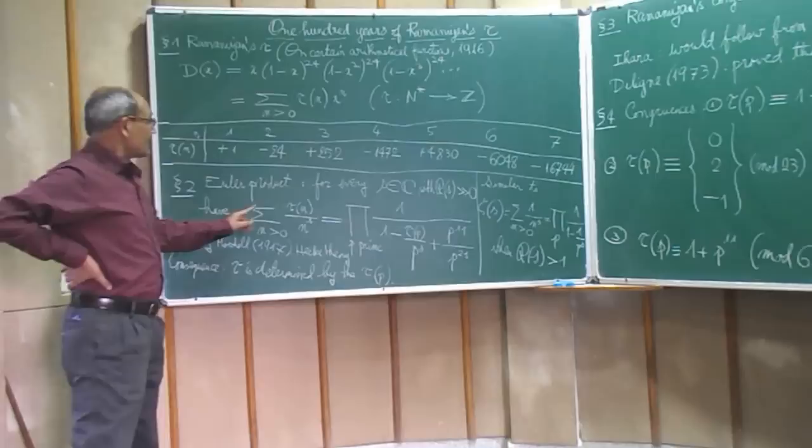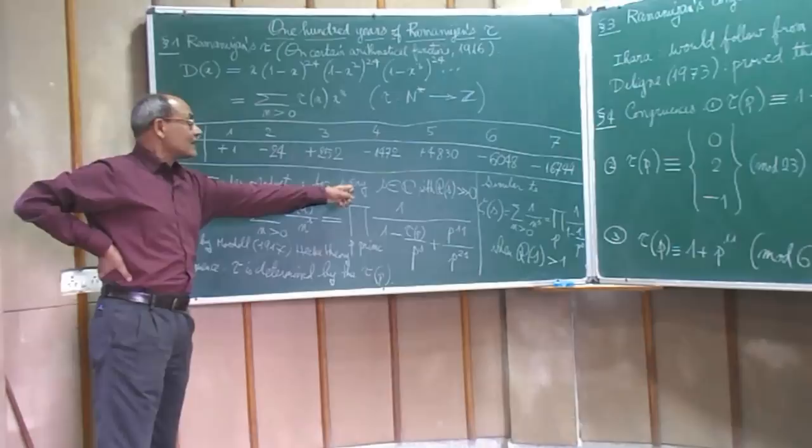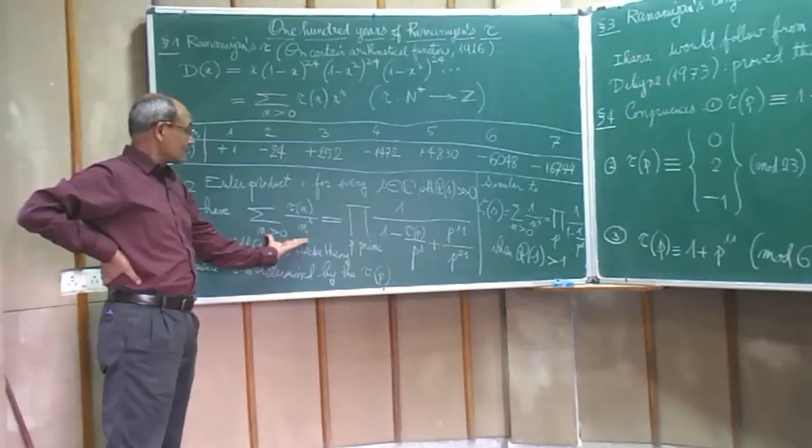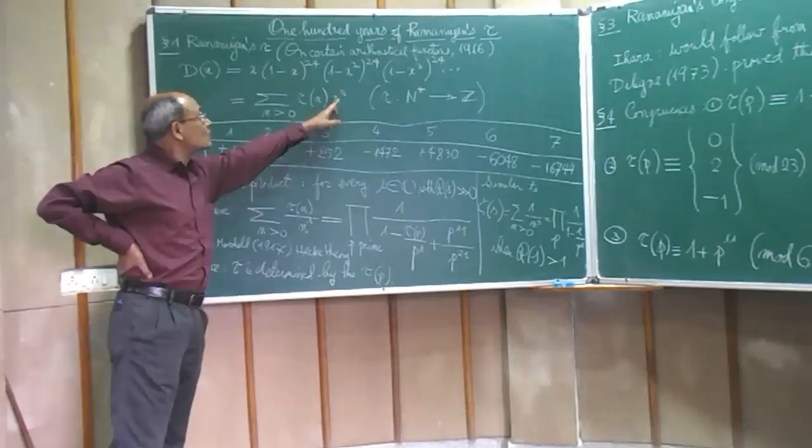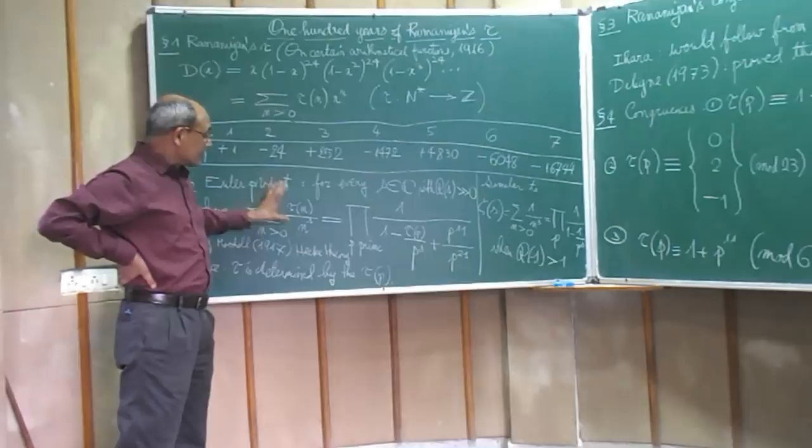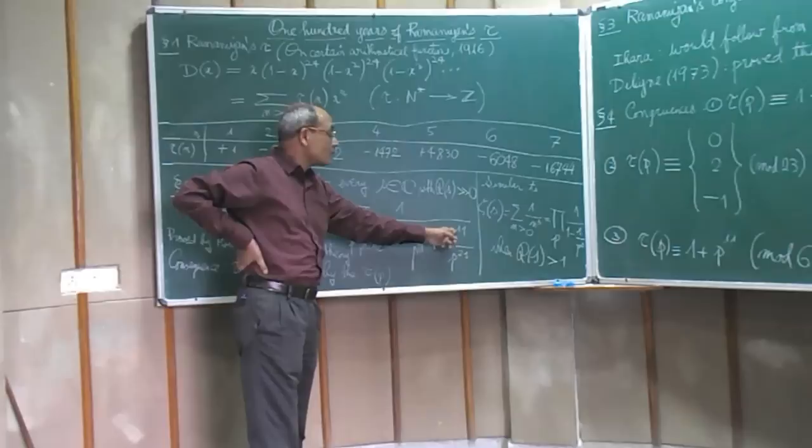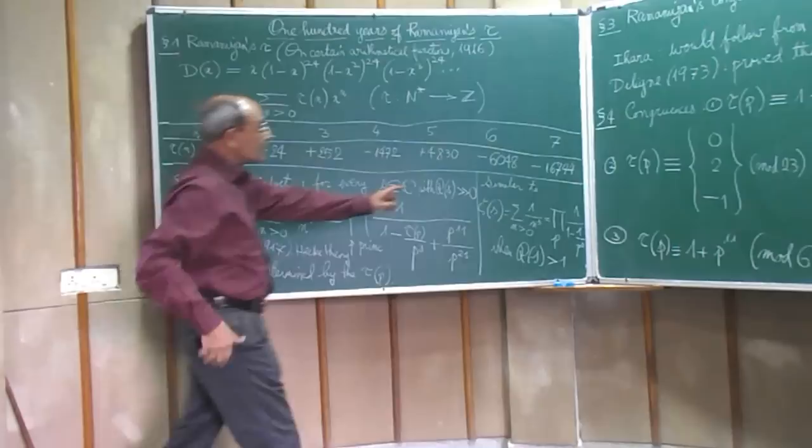One of his first observations was that this tau function, if you write it down as this series, you know, take any complex number whose real part is sufficiently big, then this series will converge. Here the coefficients are these tau n, the same as this one. The difference between this and this is that x to the n has been replaced by 1 over n to the s. So this gives you a convergent power series and the sum always turns out to be a product over all primes of 1 over (1 minus tau p upon p to the s plus p to the 11 upon p to the 2s).